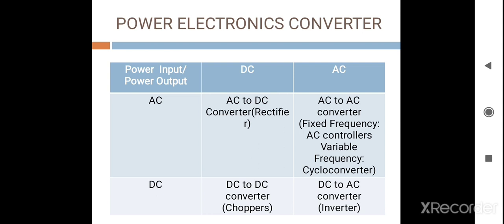If we talk about the power electronics converter, there are mainly two types. One converter converts AC into DC, in which the power input is AC and the output is DC — this type of converter is known as a rectifier. Some converters convert AC into AC with the same fixed frequency, and they are known as AC controllers. But if it converts to variable frequency, then this type of converter is known as a cyclo-converter.